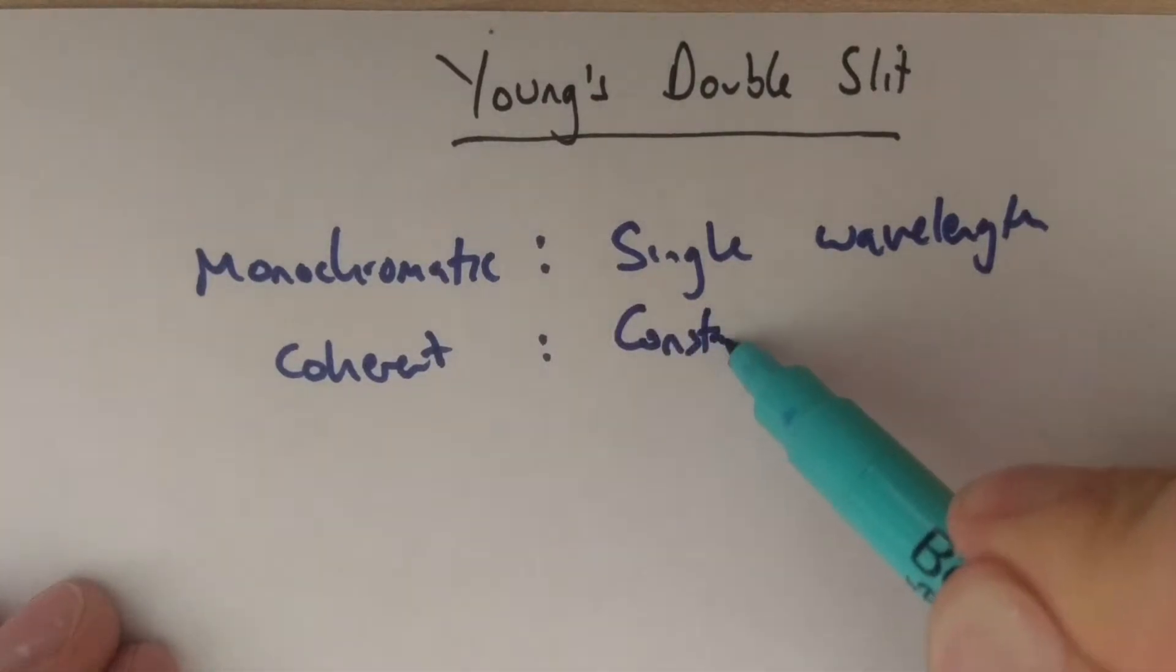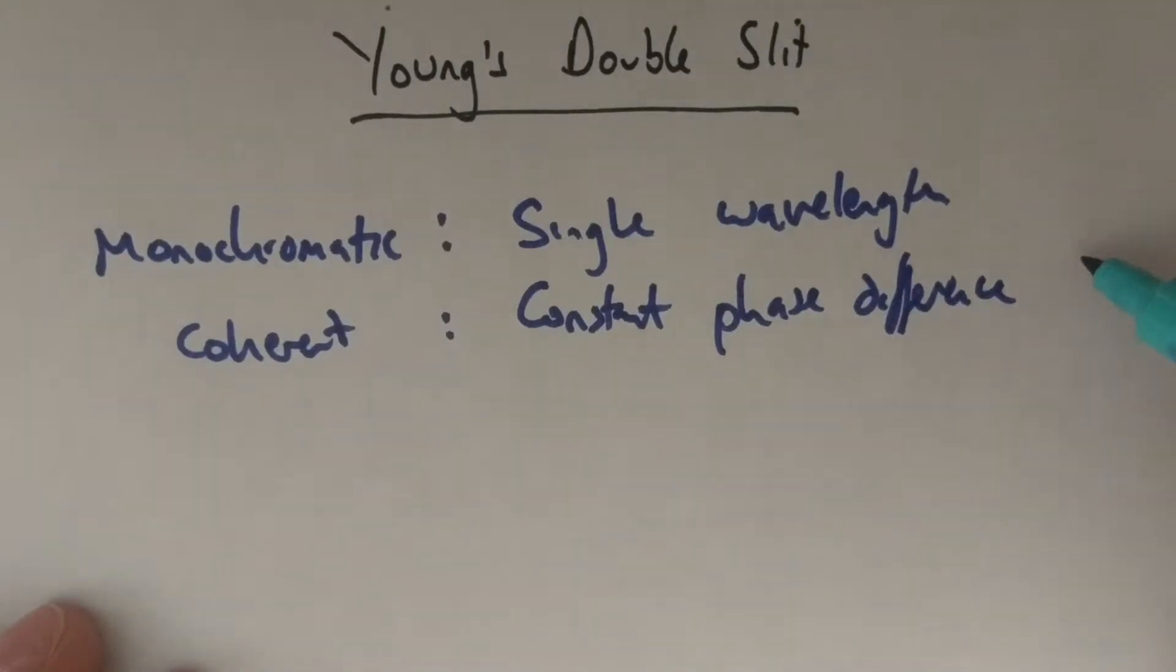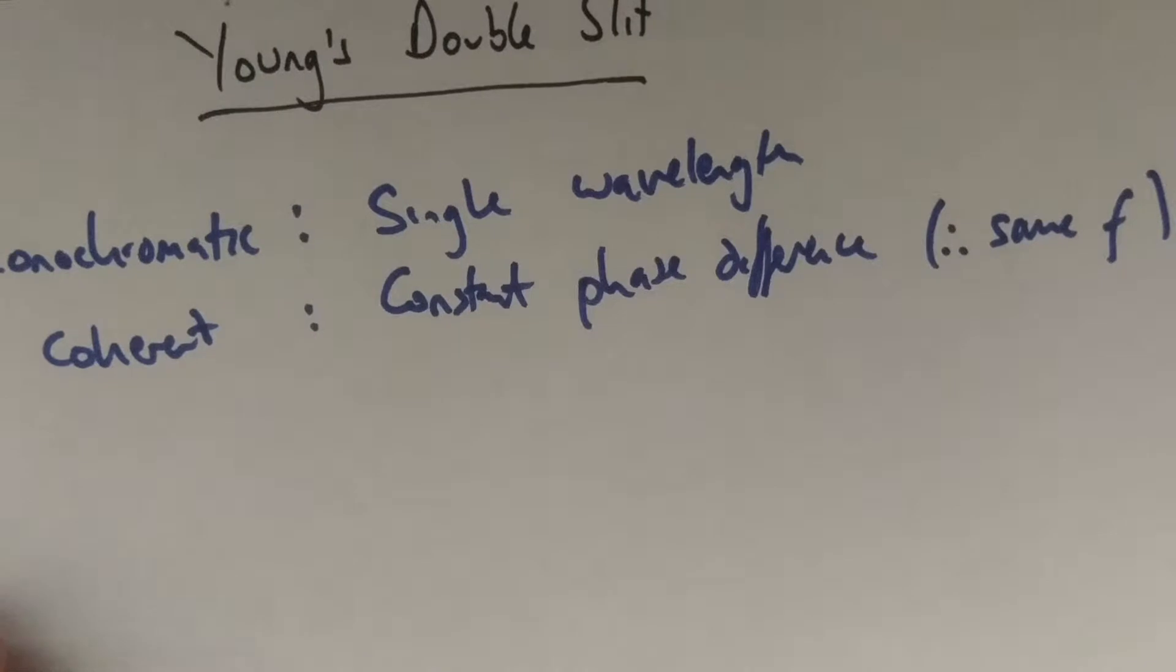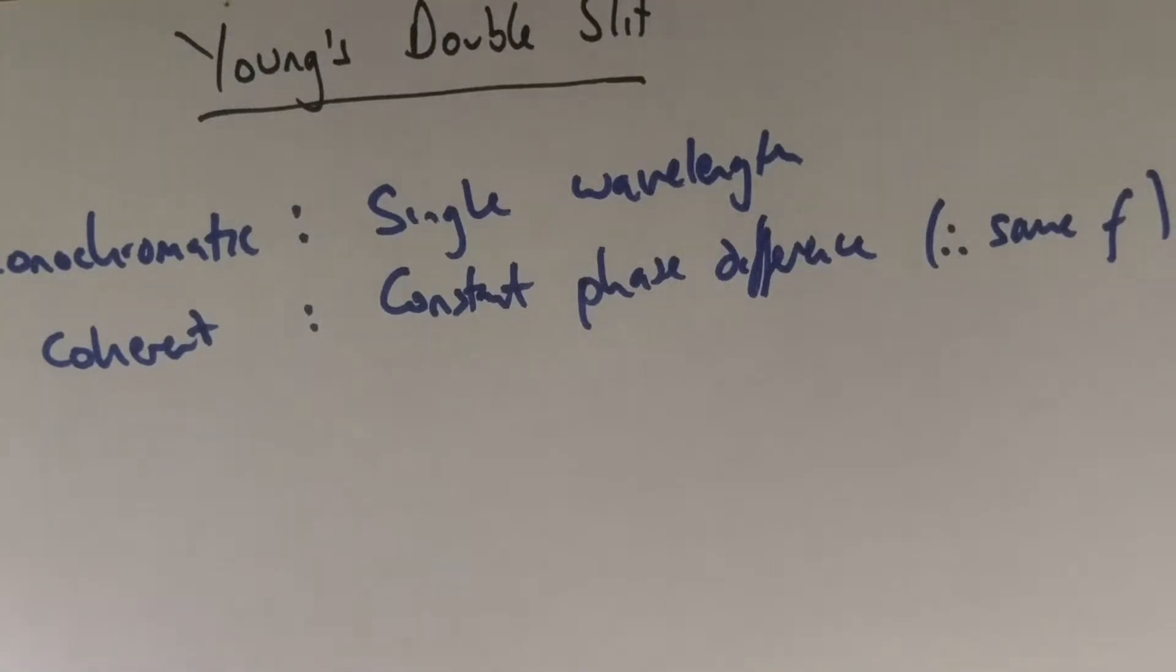Coherent means you have a constant phase difference. If you're producing coherent light, then you've got a constant phase difference. For that to happen, you must be producing light at the same frequency. If you've got different frequencies in there, you can't have a constant phase difference between them.